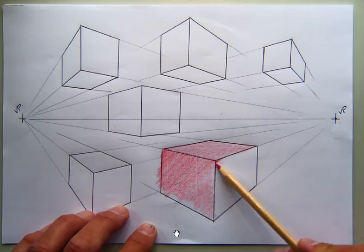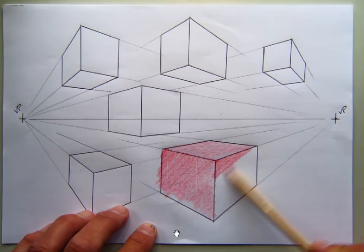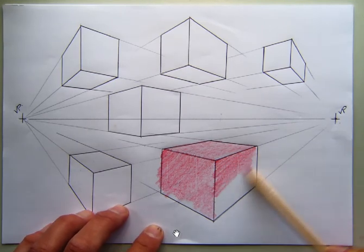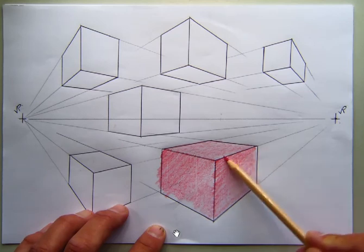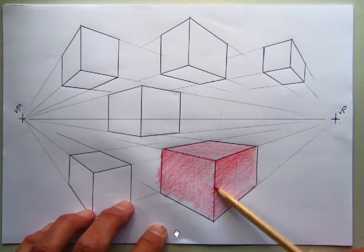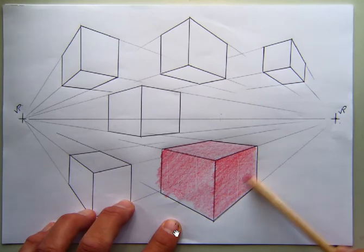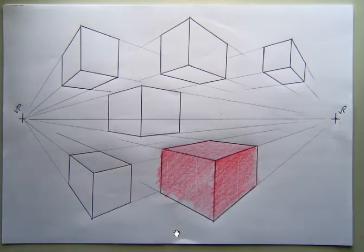Okay, and then the third surface which is going to be my darkest surface. I just go over it, so it definitely looks darker than the other two. So what I then have is my three different colours.